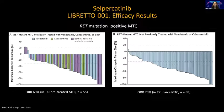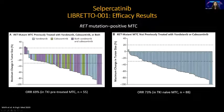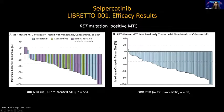Selpercatinib was the first approved RET inhibitor. The waterfall plot shows patients previously treated with vandetinib or cabozantinib or both — even previously treated patients have phenomenal responses. RET mutant MTC that was treatment-naive also showed phenomenal responses, slightly higher: 73% versus 69% in the previously treated.